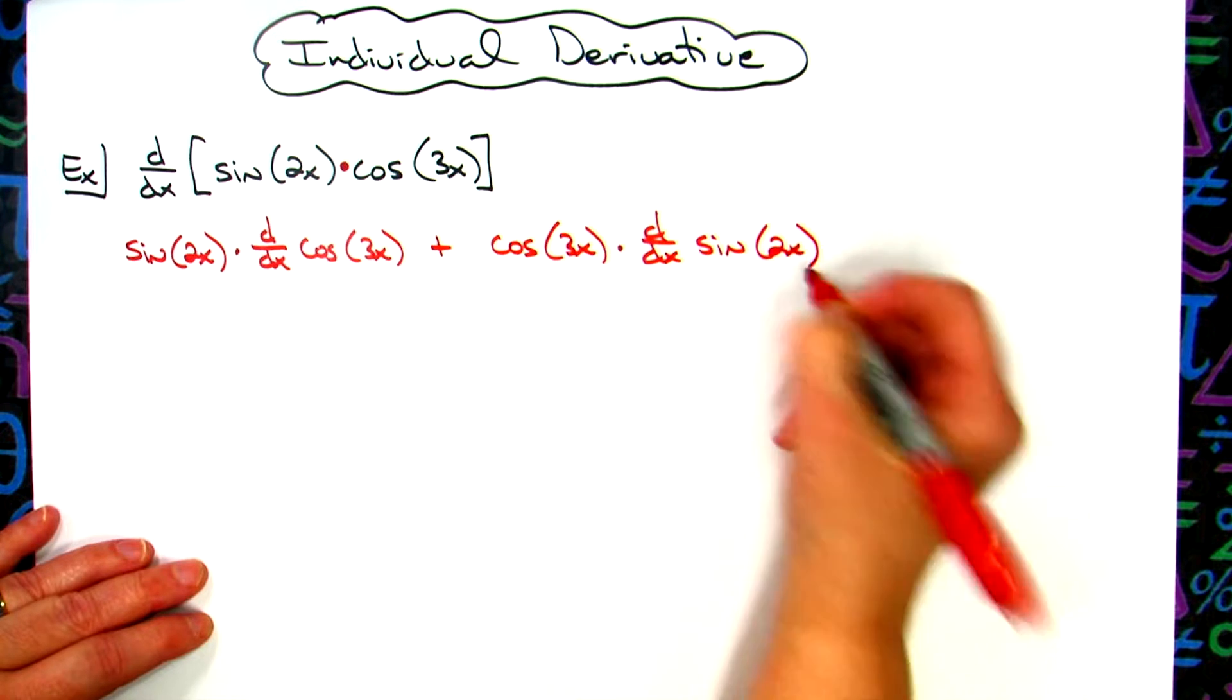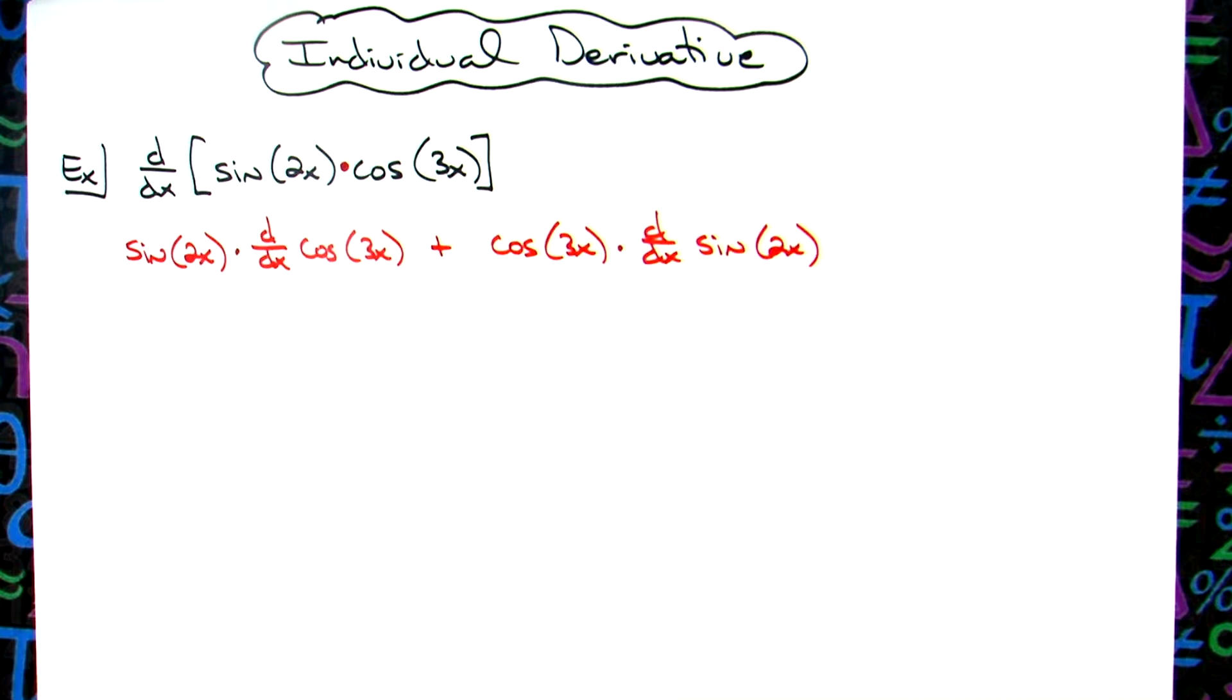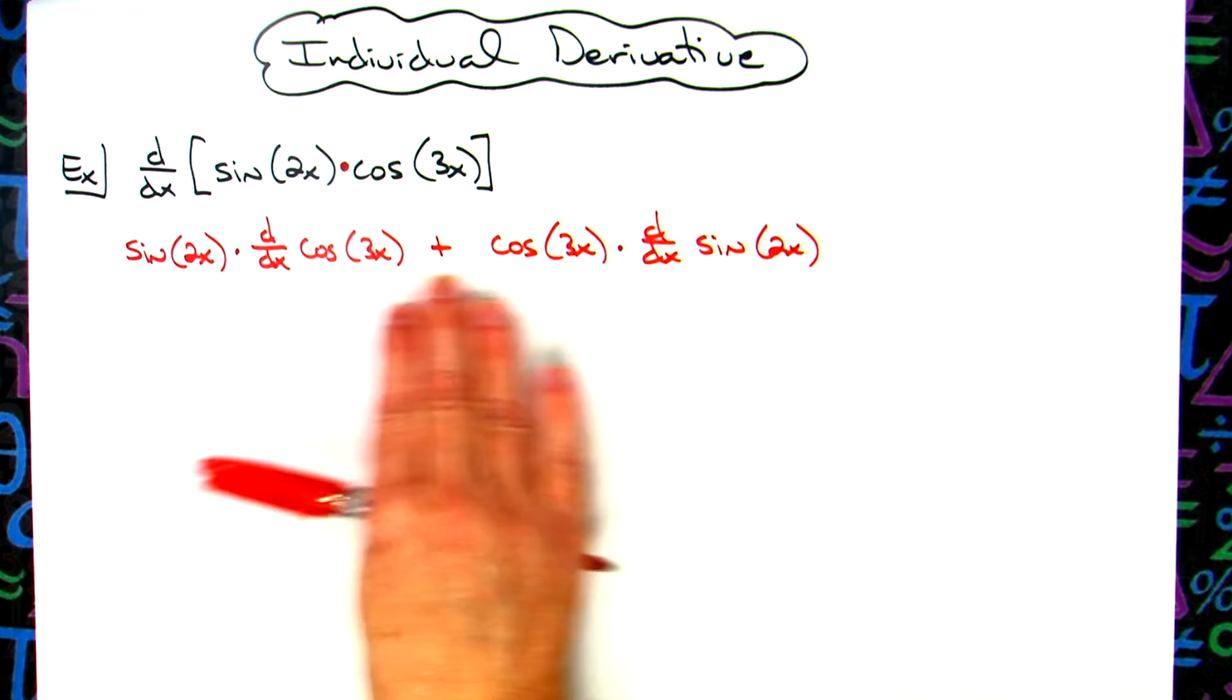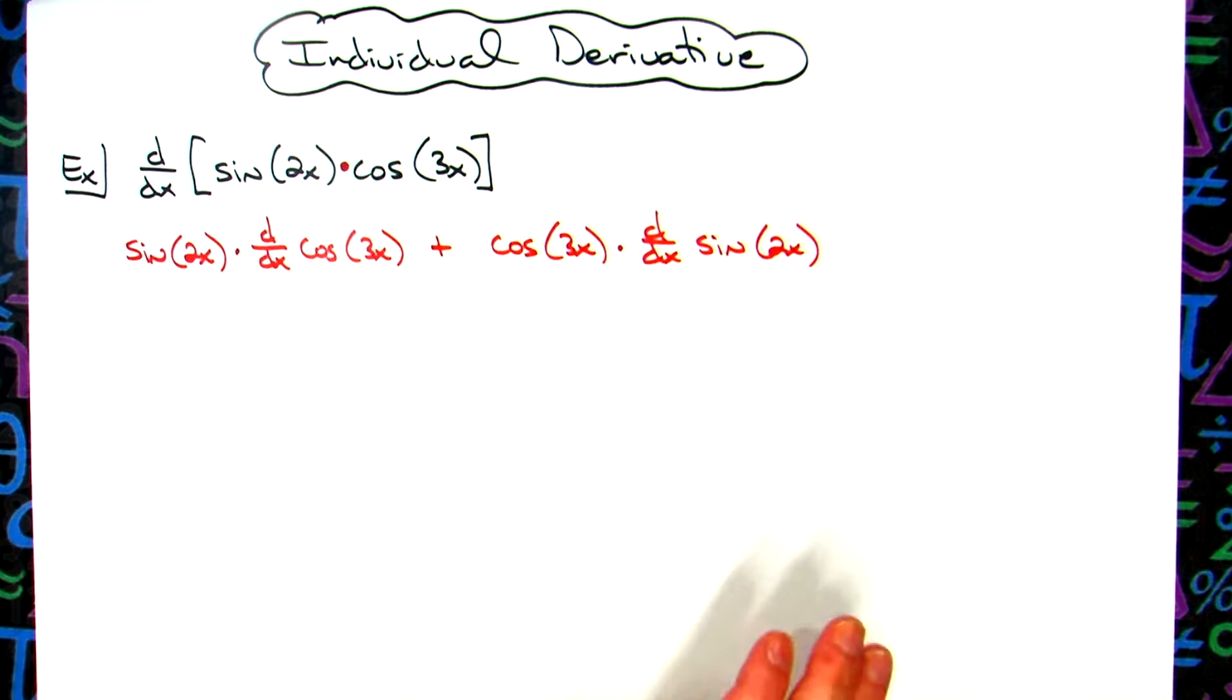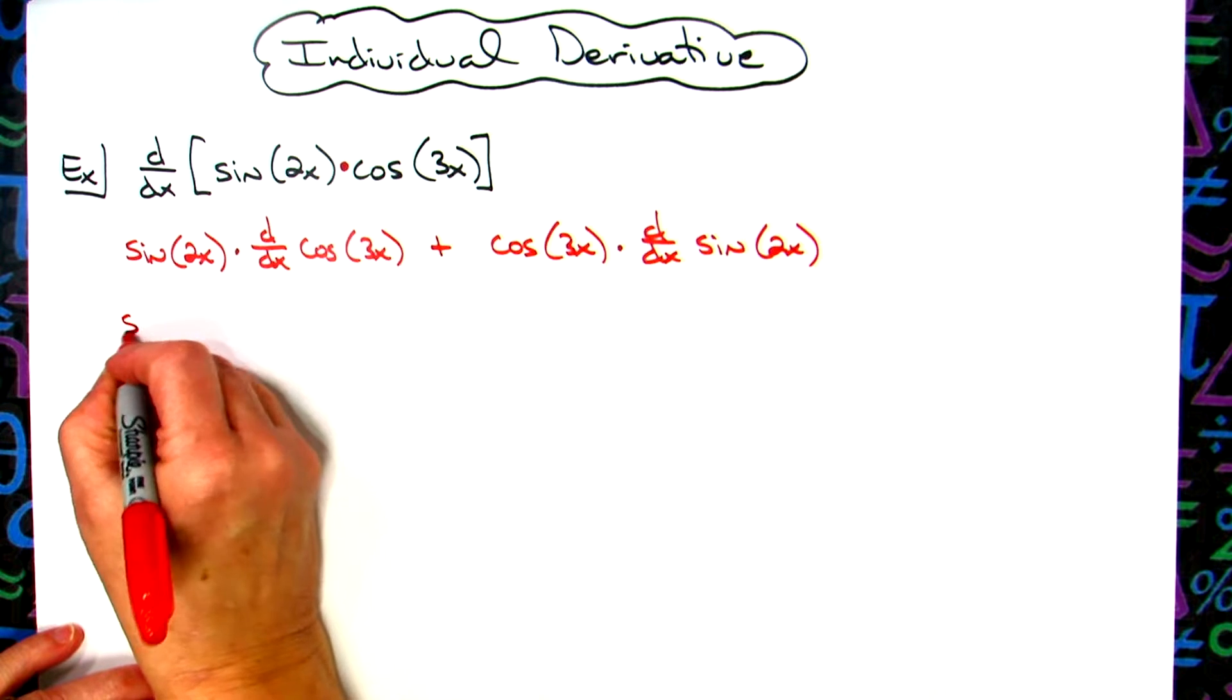All right, now you don't have to write out that first line, but doing that kind of outlines the product rule for you, so you're less likely to make a mistake here.